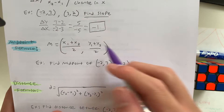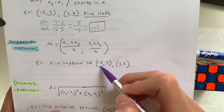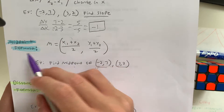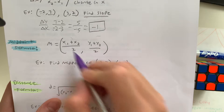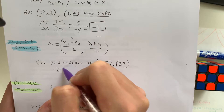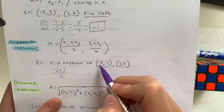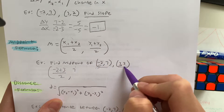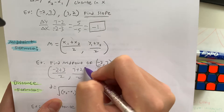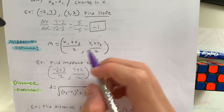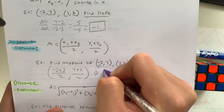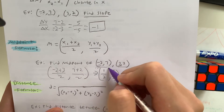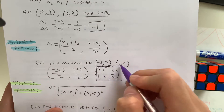So let me show you an example. They're asking us to find the midpoint of negative 2 and 7, and 3 and 2. So what is the x value? That's negative 2 plus 3 over 2, because those are the x values. And the y values are 7 plus 2 over 2. So negative 2 plus 3 equals 1 over 2, and 7 plus 2 equals 9 over 2, meaning the midpoint of these two points is (1/2, 9/2).